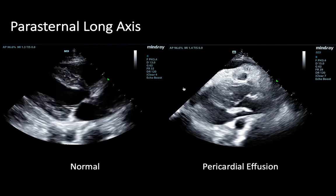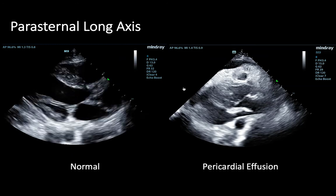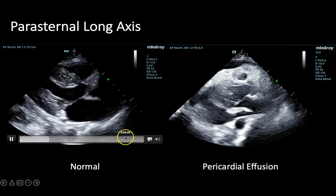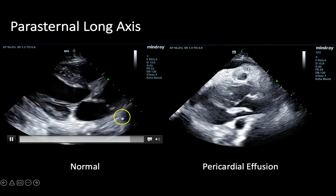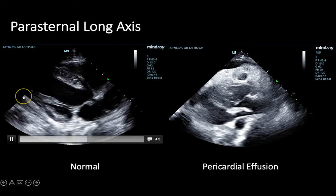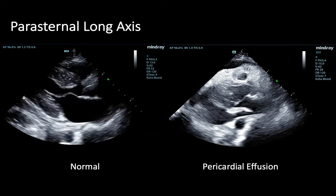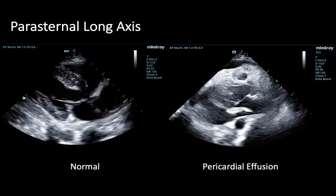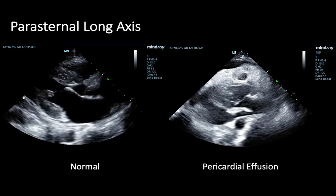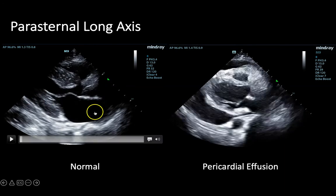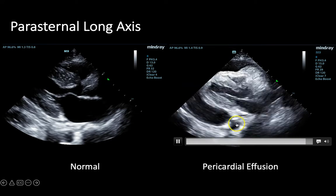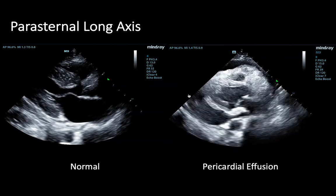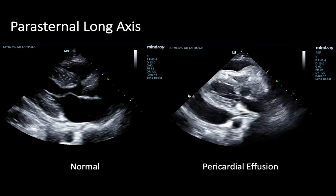Next, let's take a look at the parasternal long axis view of the heart, this time paying particular attention to the pericardium. We can see the descending aorta just below the heart, and just above it is this bright white line representing the pericardium. In the normal view, there is no fluid collection — which would appear as an anechoic or black area — anterior to the descending aorta between the pericardium and the chambers of the heart. In the comparison clip, we can see an anechoic area in that location, which is indicative of a pericardial effusion.